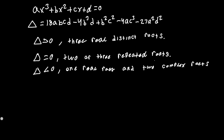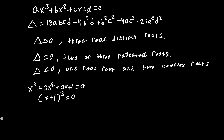When the discriminant equals 0, the cubic has two or three real repeated roots. For example, x³ + 3x² + 3x + 1 = 0 is a perfect cube — it factors as (x + 1)³. Every perfect cube has a discriminant of 0.